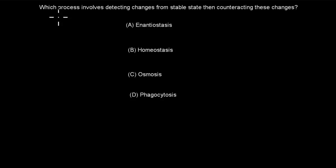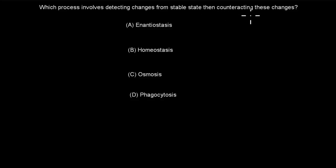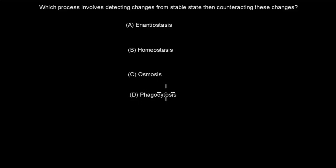The next question: Which process involves detecting changes from the stable state then counteracting these changes? A. Antiohomeostasis. B. Homeostasis. C. Osmosis. D. Phagocytosis. Pause the video.